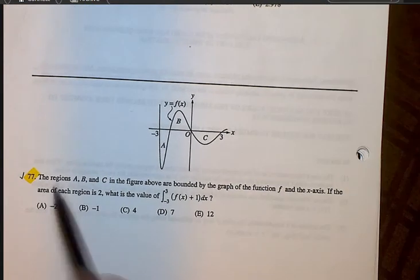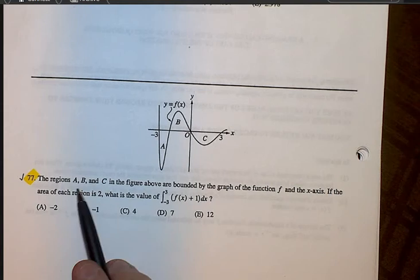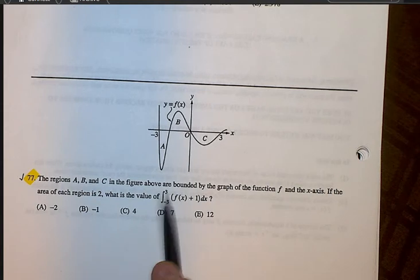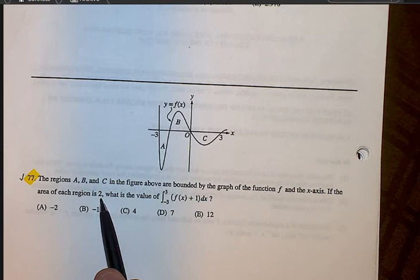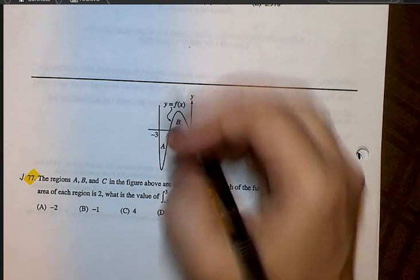First question we see is going to be question number 77. They're asking us, they have three regions, A, B, and C, and they tell us that each of the regions has an area of 2. So this is 2, this is 2, and this is 2.